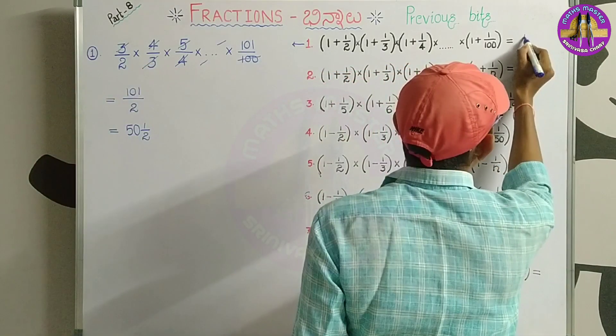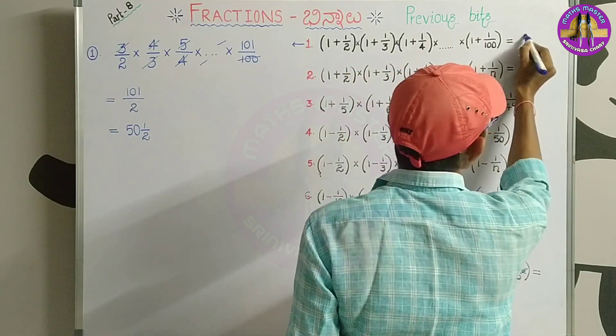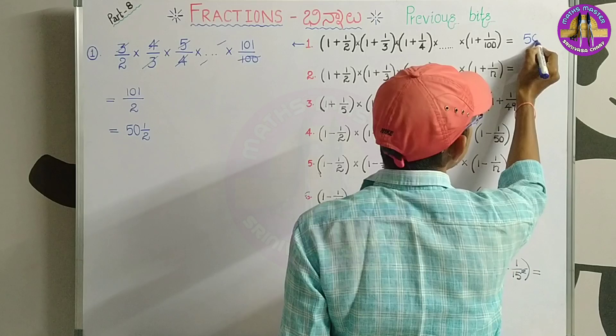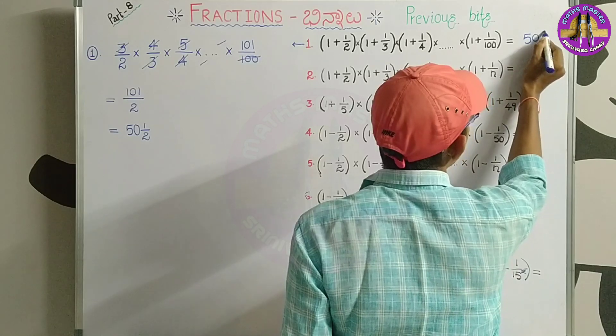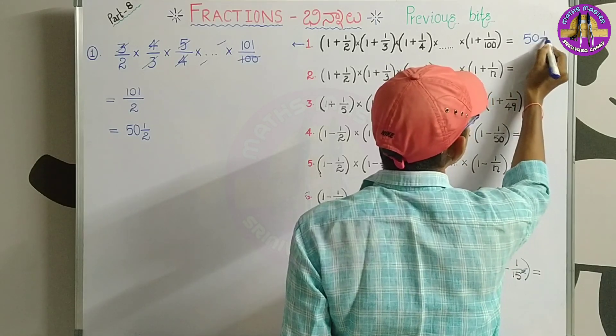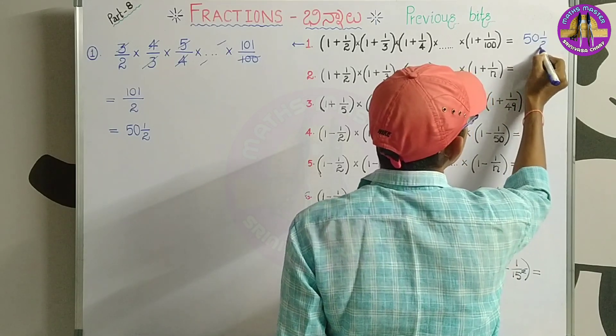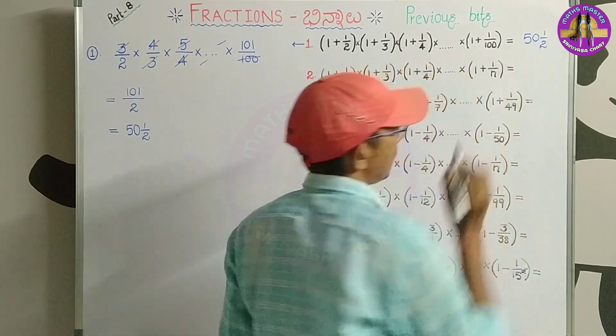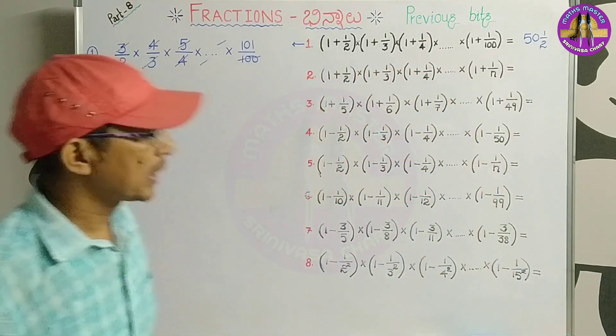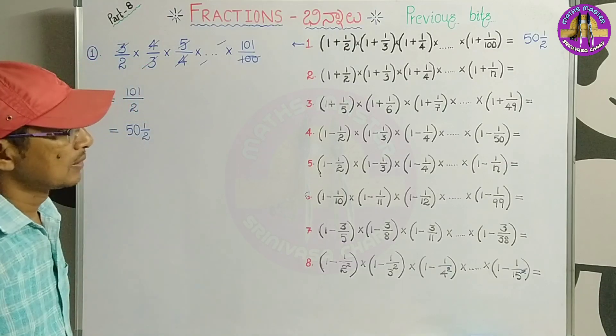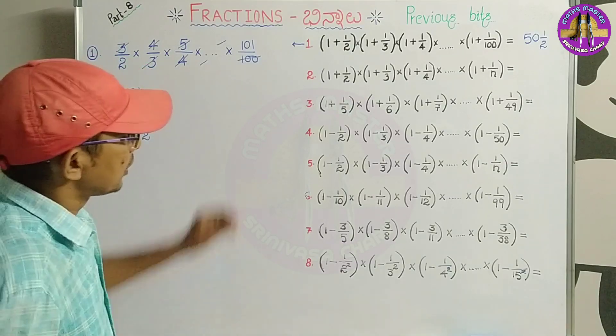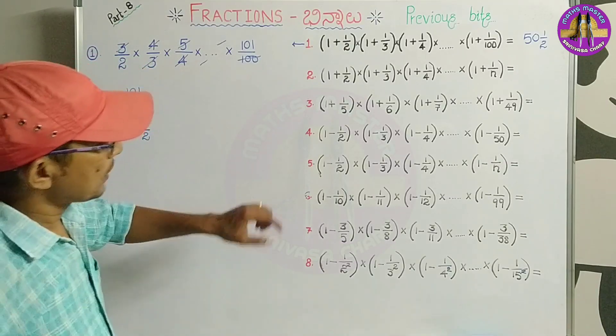So the answer for the first question is 101 by 2, which is 50 and a half. Clear? Right. Now let's go to the second question.